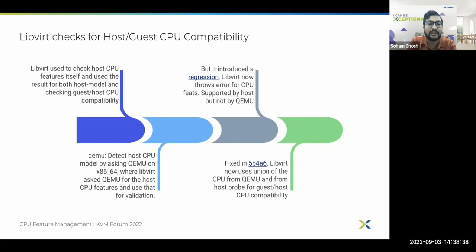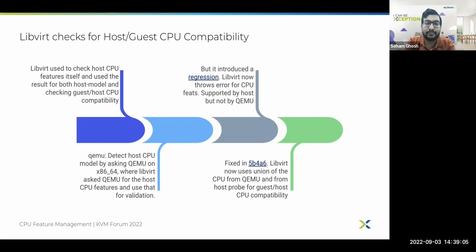Later, as part of a patch set, it was decided that libvirt should move away from probing the host. Instead, it should rely on the underlying hypervisor, QEMU, to tell libvirt what the host CPU features are, and then libvirt could use those features to validate the requested guest CPU configuration. However, this introduced a regression — a bug which threw errors whenever some CPU configuration was requested for the guest VM that was not supported by the host according to QEMU.